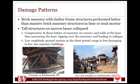It is seen that brick masonry with timber frame structures performed better than massive brick masonry structures in lime or mud mortar. You can see a temple in Kathmandu Darbar Square where the temple is standing still though the brick masonry walls have fallen out. It is mainly because the temple stands on the timber frame structures. Similarly, most of the tall monuments on narrow bases collapsed as compared to low-rise masonry monuments. This is because this earthquake, being low amplitude ground motion in the short period range, is less damaging to low-rise masonry buildings. The ground motion results in compression and shear failure of masonry in corners and walls at the base, thus narrowing the base, further resulting in tipping over the structure and leading to collapse.